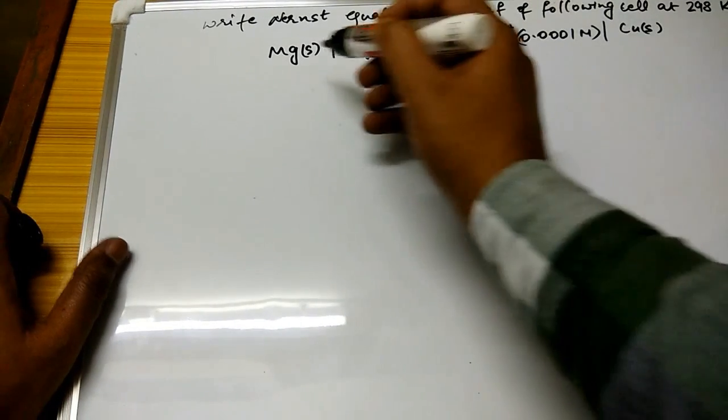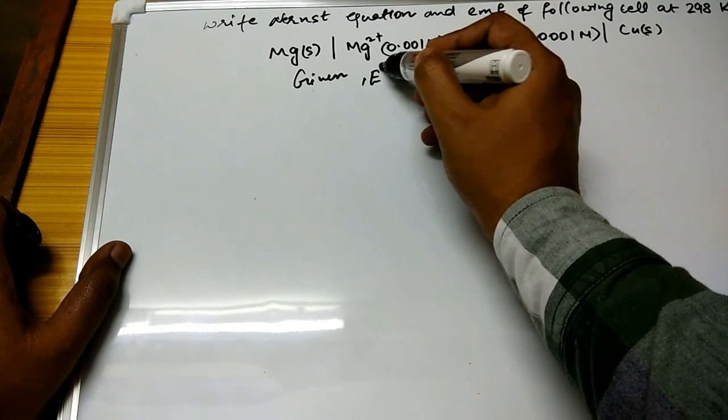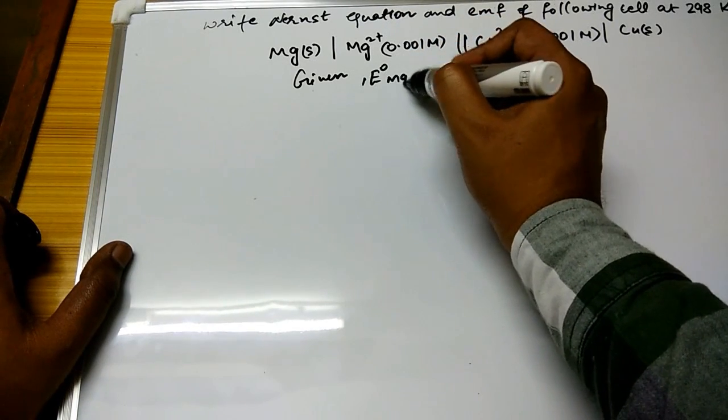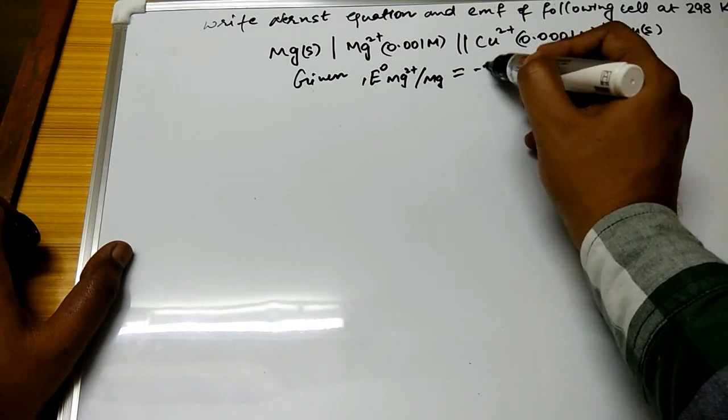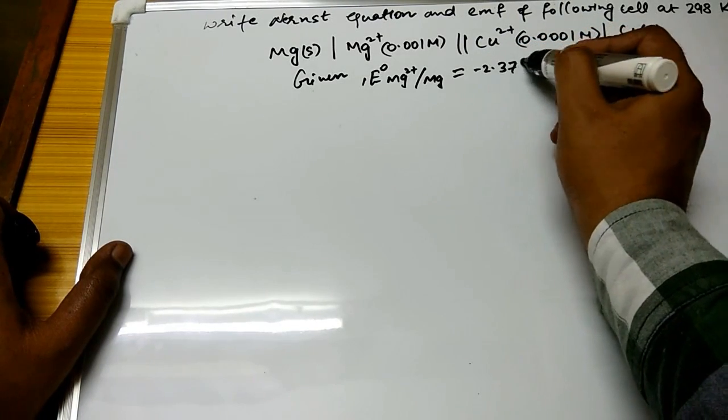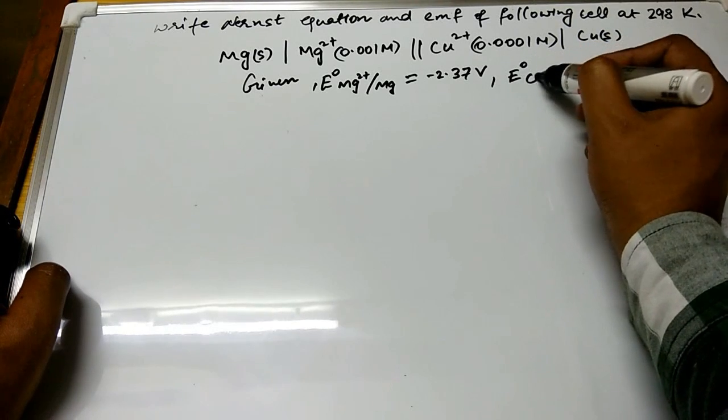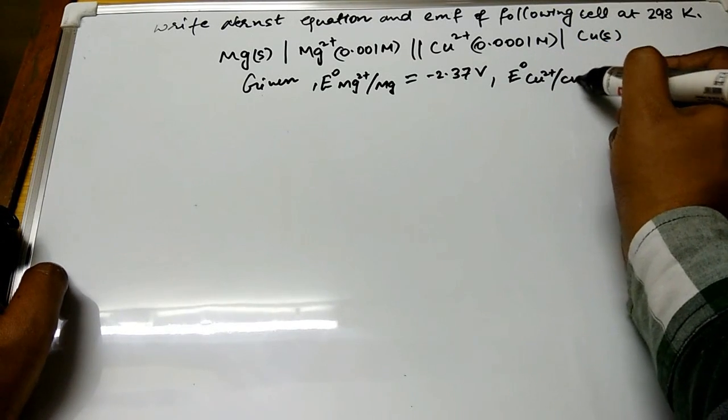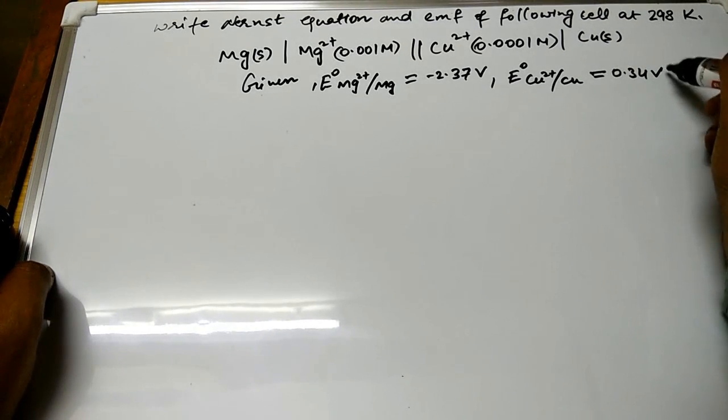So something also is given. Given: E° Mg²⁺/Mg = -2.37 V, whereas E° Cu²⁺/Cu = 0.34 V.